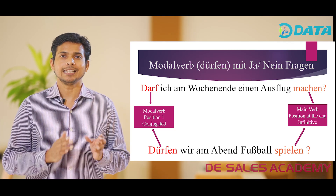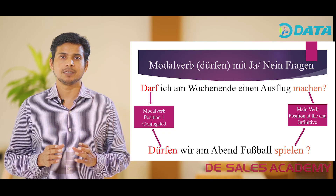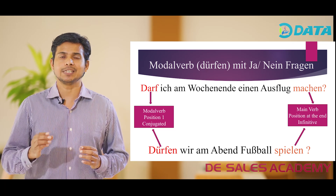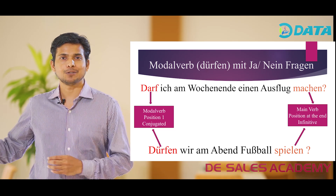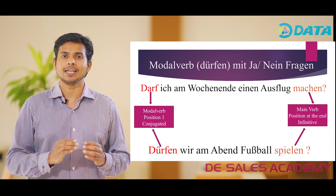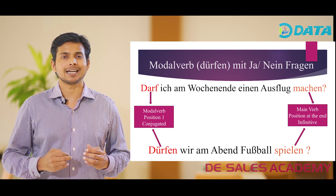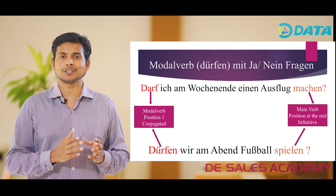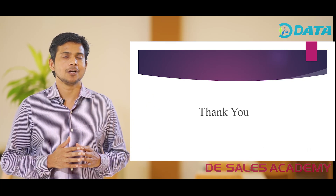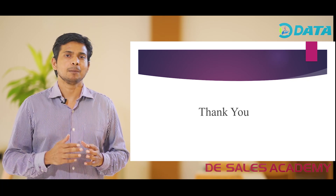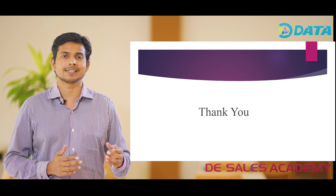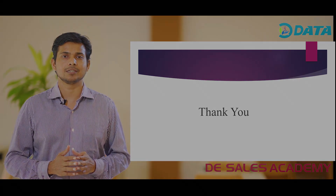Please remember: in Ja/Nein-Fragen when we use a modal verb, the modal verb is placed in the first position, conjugated according to the subject, and the main verb goes to the end of the sentence in its infinitive form. Hope you had a clear understanding about the usage of modal verb Dürfen in different kinds of sentences. Please check out further videos from this academy to clarify your doubts on various German language topics. Thank you.